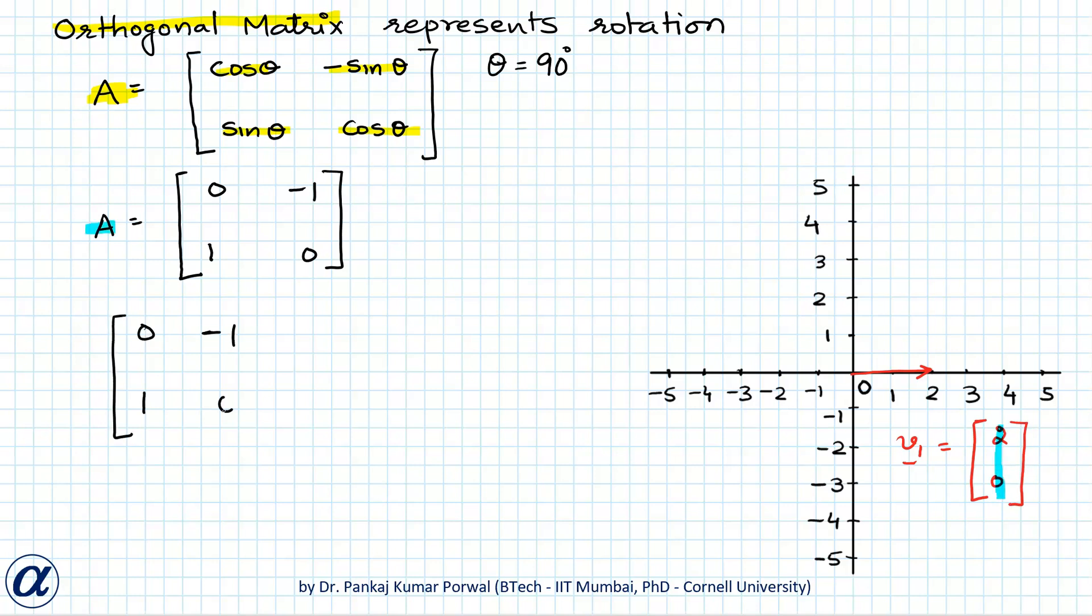Now if I pre-multiply this vector with matrix A, then I get: this will be multiplied with this, so that will give me 0, and this will be multiplied with this and that will give me 2. So if I plot this vector here, x component is 0 and y component is 2.